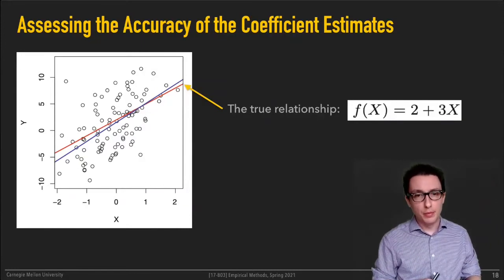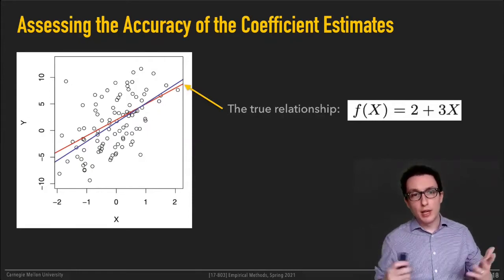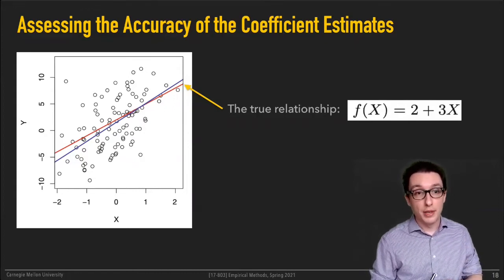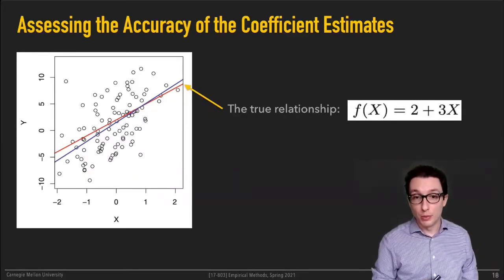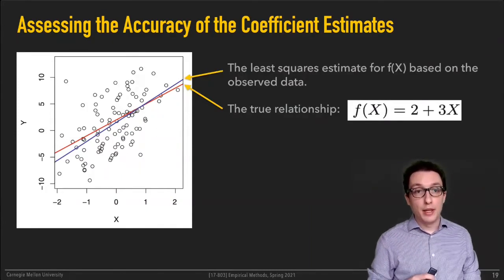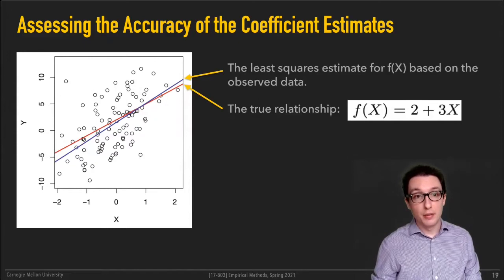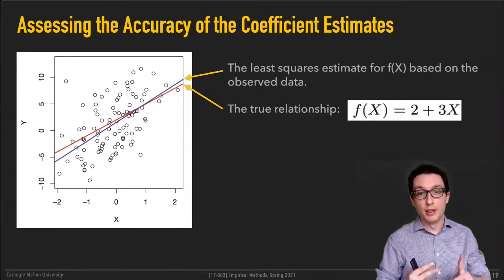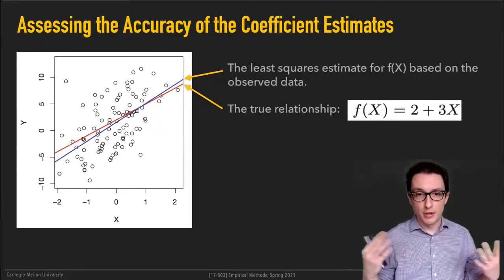How do you measure or assess the accuracy of these estimates of your coefficients, the betas? Let's say there's some true relationship — let's say you could know the true relationship is of the form Y equals 3X plus 2. That's your gold standard, the thing you're hoping to approximate. That's the red line you see in the plot there. Obviously you can't get that because that would involve no measurement error and access to all individuals in the population, which is never possible. We always look at a sample of the population, not the entire population.